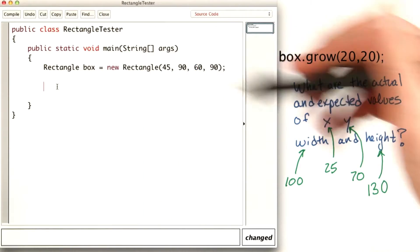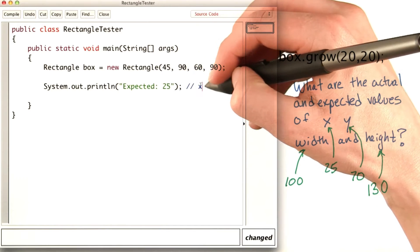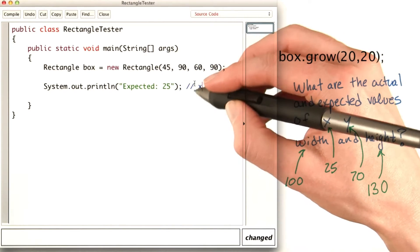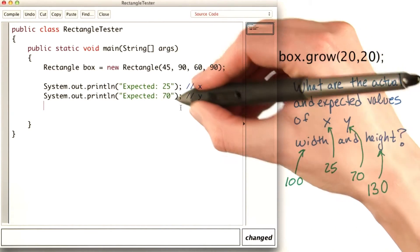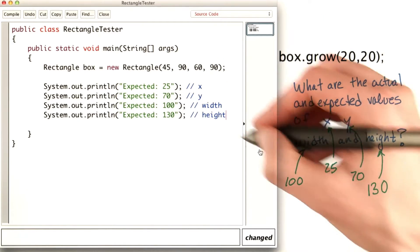So in the test program, I would create my new rectangle, and I would print out my expected value for x. And remember, this is just a comment. The expected value for y, the expected value for width, and the expected value for height.